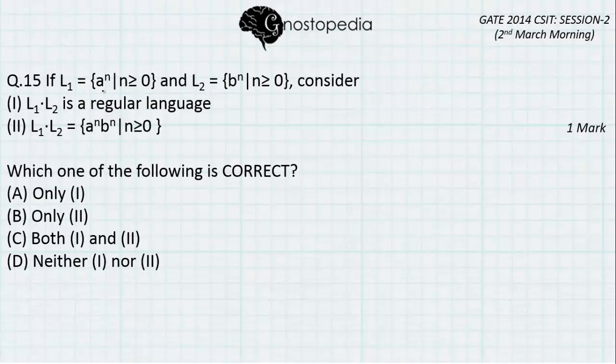Now, L1 is equal to a raised to n where n is greater than or equal to 0. Let us find out the strings that are part of this language. When n is equal to 0, it becomes a raised to 0 that means the string is empty. Do not write 1 because this is not mathematics. n is equal to 1 is nothing but 1a, n is equal to 2 will give me 2a's and so on. As you can see, this is nothing but a closure.